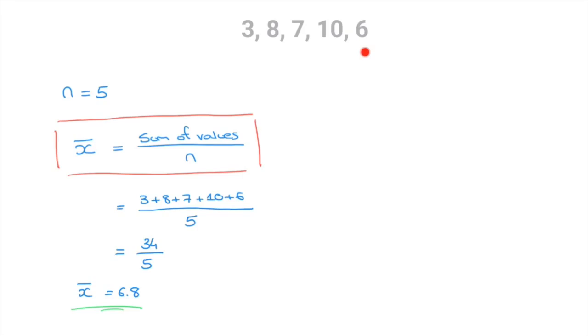So the mean of this list of data is equal to 6.8. And the good news is, no matter how large our list of data gets, the method we've just seen will always work. In other words, the mean is always equal to the sum of the values that we have, divided by the number of values that we have.